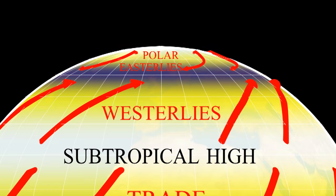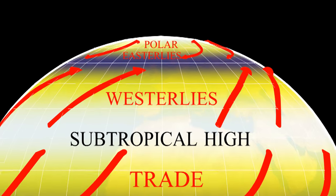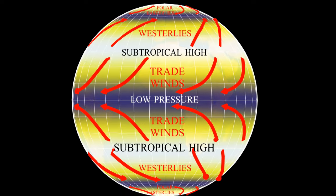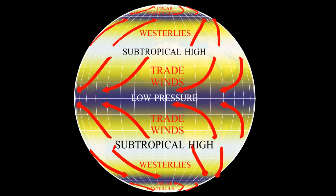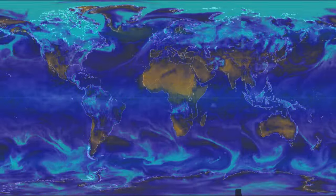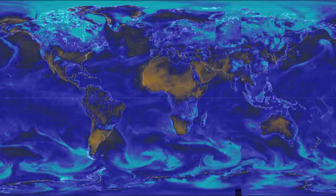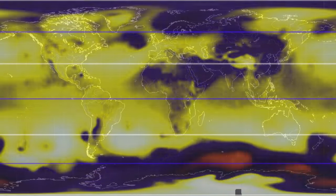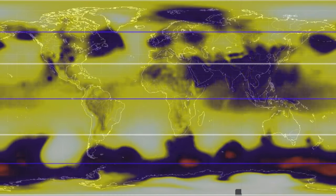I've now described the three-cell model of the earth for the Northern Hemisphere. The Southern Hemisphere is much the same — it's a mirror image of the north. Now this is a nice theoretical model, but if you look at real-world data, you'll see that everything is way more complicated. The high and low pressure zones are not actually in neat bands across the earth — they're in blobs that are constantly moving around.